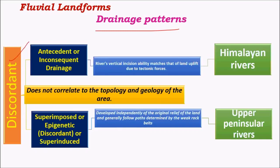Coming to different drainage patterns, the first important one is discordant drainage pattern, in which the drainage pattern doesn't correlate to the topology and geology of the area — meaning crustal features like rock strata and mountainous regions. The first type within discordant drainage is antecedent or inconsequent drainage, mainly found in Himalayan rivers where the rivers were born much before the mountains. The mountains only started forming about 60 million years ago, and as the raising of these mountains took place, the rivers started cutting uplifted landforms vertically, making vertical erosion very significant.